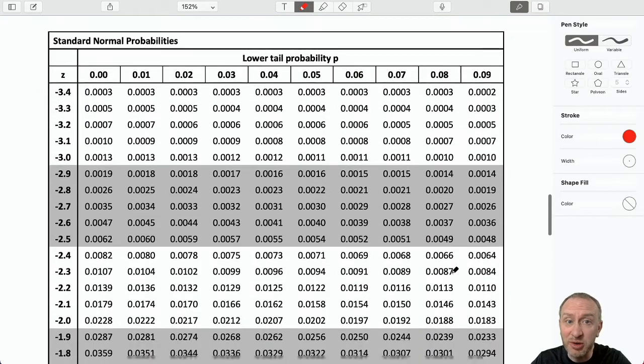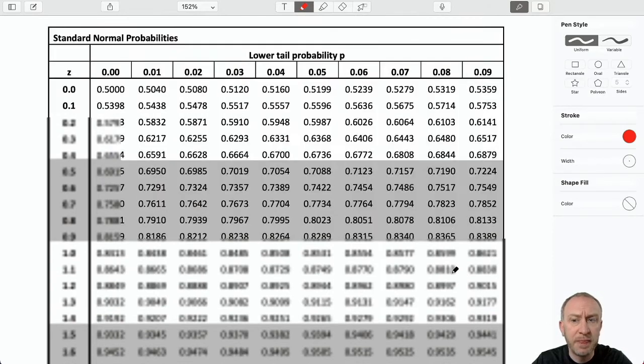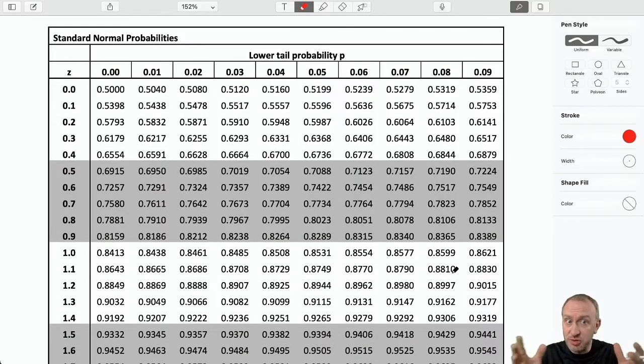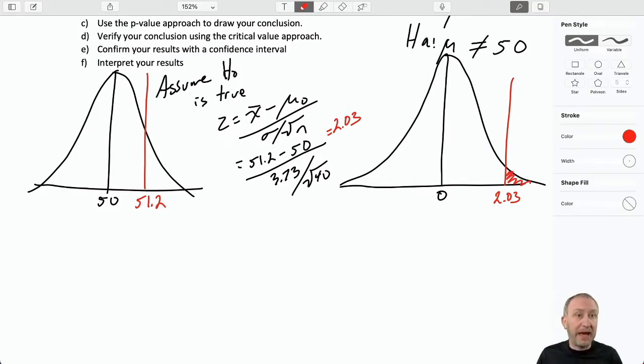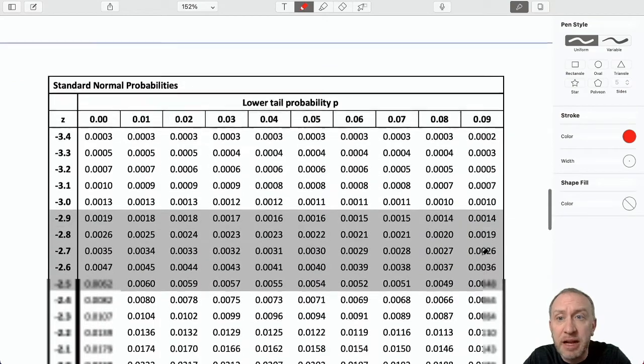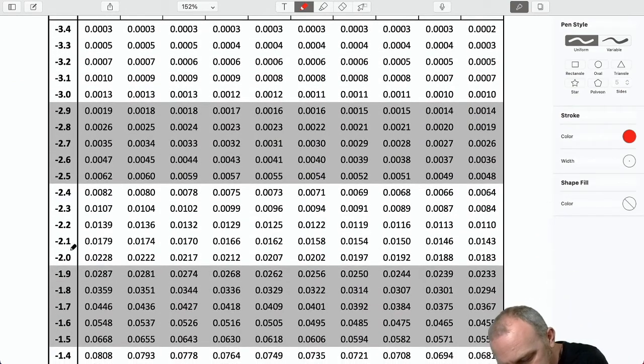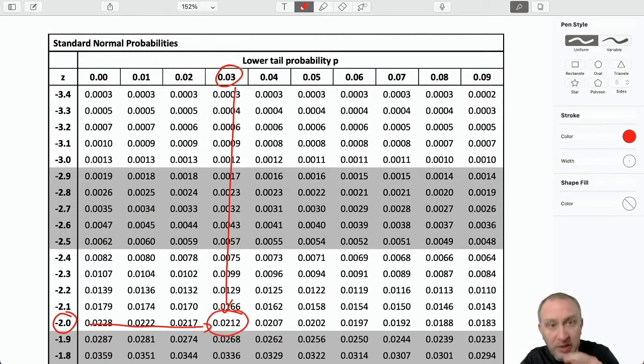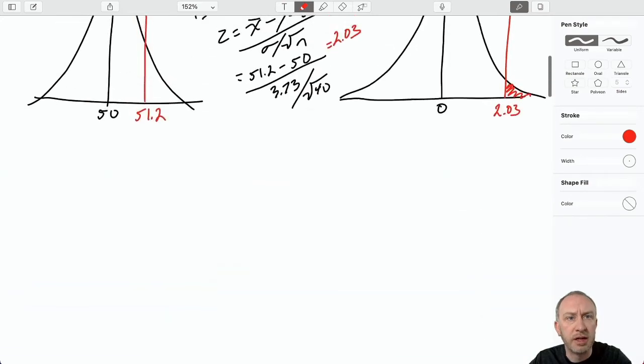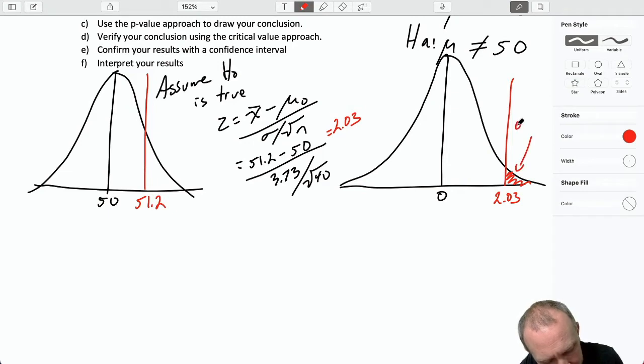Now, it's positive 2.03. Do I want to use positive 2.03? Well, remember, what we're doing here, this is a two-tailed test. I don't want to forget about that. It's a two-tailed test. So the value that I'm actually interested in is this value up here, that upper tail value. I'm going to take advantage of the symmetry of this distribution. Again, we've talked about that in earlier videos, to know that this distribution is perfectly symmetric. So I'm going to take advantage of that, and I'm going to look at the negative side. And so there's 2.03. And so that gives me this value of 0.02. So I'm going to come back up here. I have a probability here of 0.02.